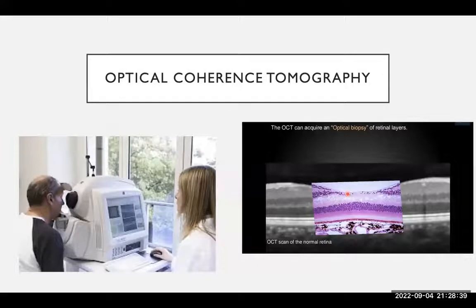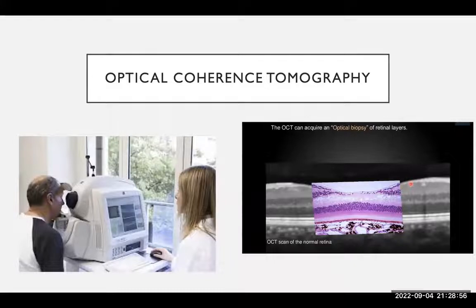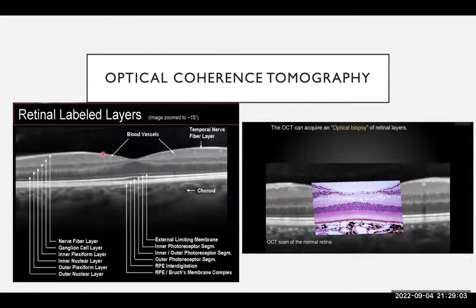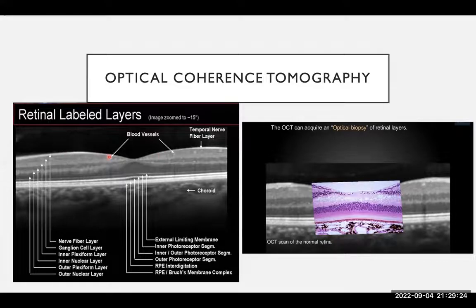If any of you have been to a macular clinic, you may recognize this machine — it's called the optical coherence tomography machine, or OCT. What this does is give us a cross-sectional view of the retina, in particular the macula. It's a bit like an optical biopsy of the retina, giving us very detailed anatomy of the macula. This is absolutely critical to our care and management of macular disease, and here is a cross-sectional view of a normal macula that I'll be referring to throughout the talk.